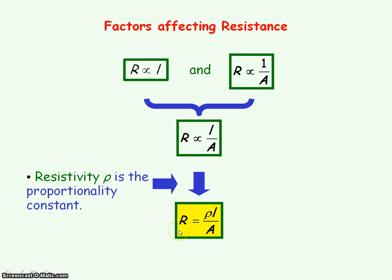So we can say that resistance equals resistivity times length divided by cross-sectional area: R = ρL/A. This equation shows the three factors that affect the resistance of a wire: the resistivity, which is a constant for a given metal; L, the length of the wire; and A, the cross-sectional area of the wire.